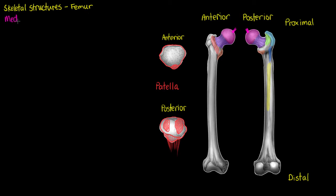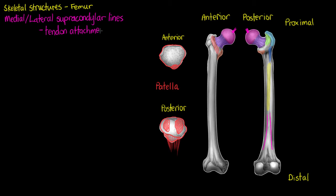Welcome back to the second part of the tutorial on our femur, where we're going to finish off with the features we will find on the lower half of the bone. Let's jump right back into it with the medial and lateral supracondylar lines, which we will find on the posterior aspect of the bone. We've got the medial and lateral supracondylar lines — supracondylar meaning more superior to our condyles located at the end of the bone. These lines are just roughened surfaces that act as tendon attachment points.